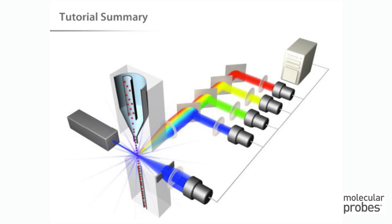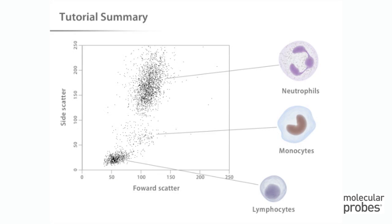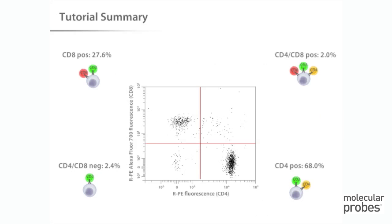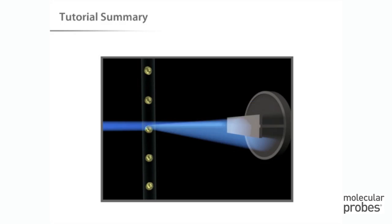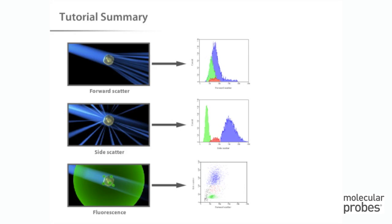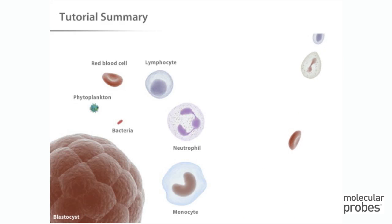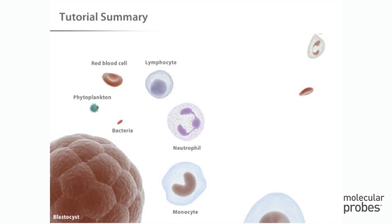In this tutorial, we have seen how data collected by the flow cytometer can be used to look at everything from cell size and complexity to more detailed features of cells, such as lymphocyte surface antigens. These analyses are possible because the scatter and fluorescence values gathered as each cell passes through the laser are associated with that particular cell in the data file, making it possible to perform a multitude of queries after the actual flow cytometry run has been completed. When you combine this data analysis capability with the throughput of thousands of cells per second, you begin to get an idea of the power of flow cytometry for modern cell biology research.